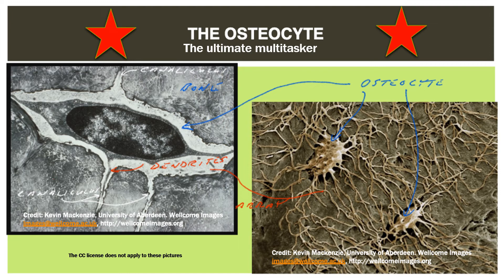On the right, removal of the mineral chemically demonstrates two osteocytes — stellate cells from which dendrites extend — channeled through this network to link to neighbors, surface cells, vessels, and even the marrow.